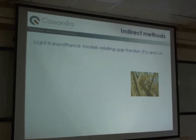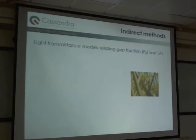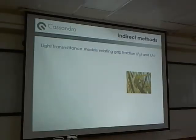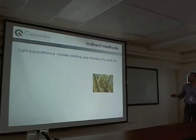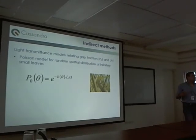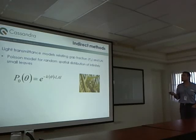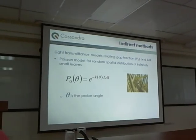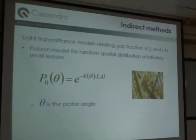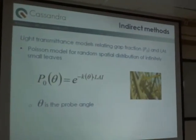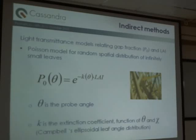Let's go back to these indirect methods for leaf area index estimation. They are based on the inversion of light interception models that relate gap fraction to leaf area index. The gap fraction — the blue pixels in the image — represents the pixels corresponding to sky compared to all pixels in the image. This gap fraction is related to leaf area index using different models. The most famous is the Poisson model for random spatial distribution of infinitely thin leaves. You can see immediately that there is this theta, which is the zenith angle, and then there is this k, which in these models is not the—